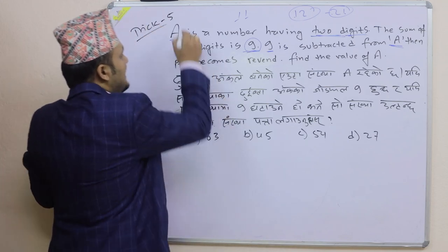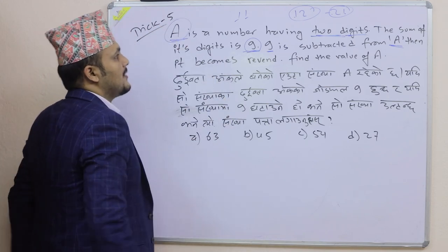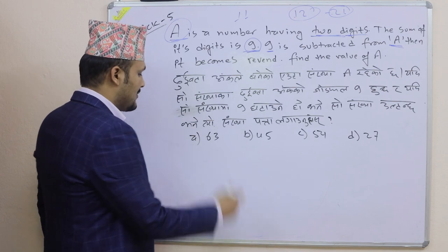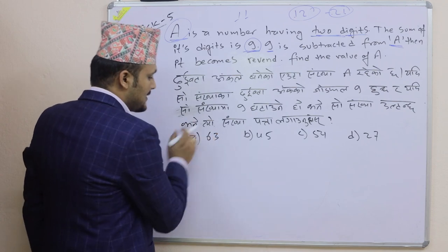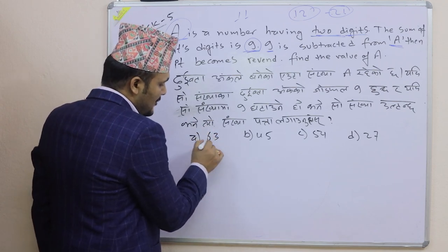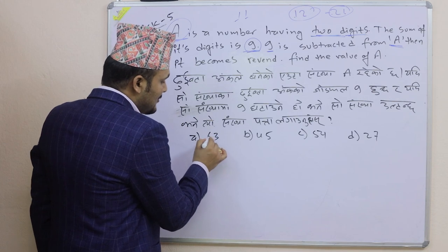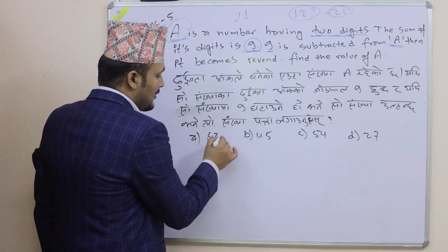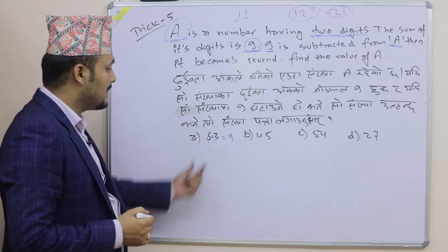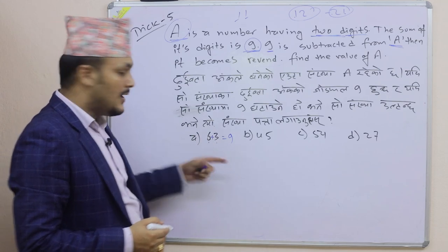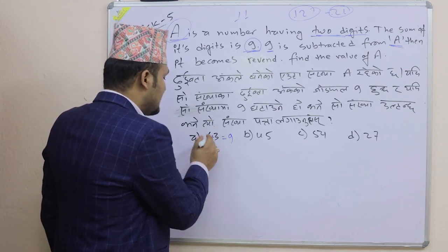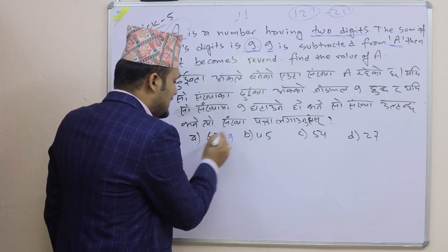A is the number having two digits. The digit sum is 9, that is 9.